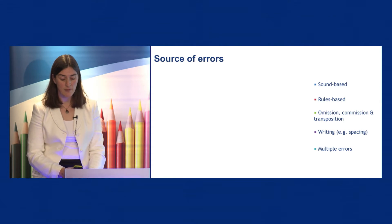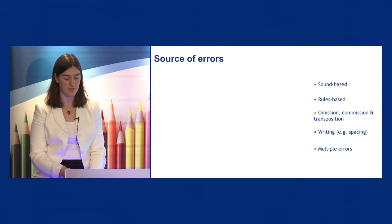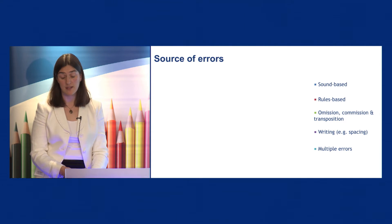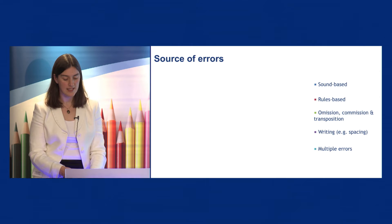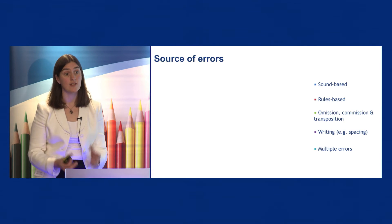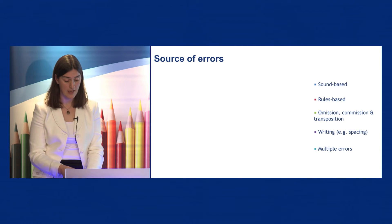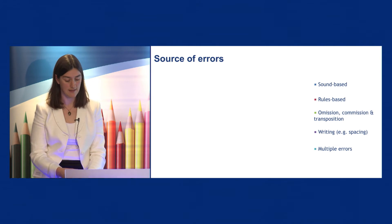Finally, we investigated the type of errors that students are making. We coded all the misspelt words using a framework developed from the version that Elliot and Johnson used in 2007 to classify the single-sentence sample from 2004. Their framework consisted of five broad categories — each with several subcategories — for example, sound-based errors including subcategories such as homophones and phonetically acceptable alternative spellings. Elliot and Johnson's framework is slightly different to that commonly used in the literature, which has tended to focus on phoneme-grapheme combinations or the proportion of errors involving omission, commission, transposition, and substitution of letters.